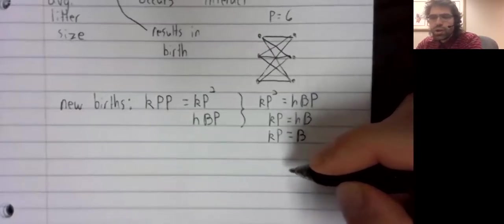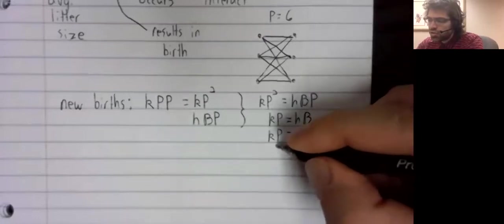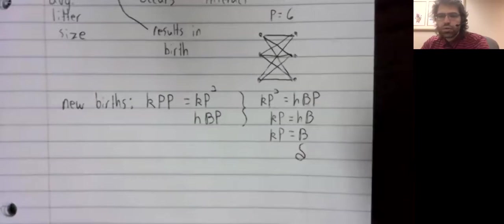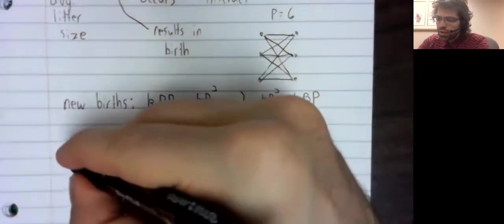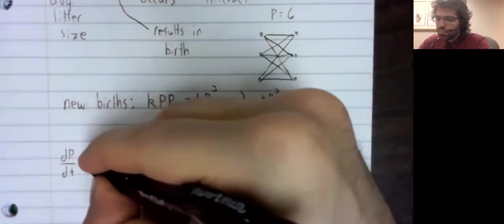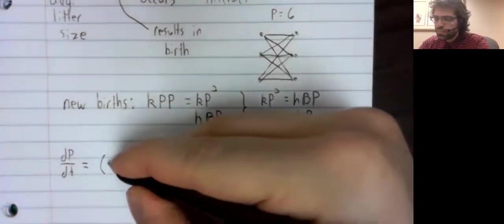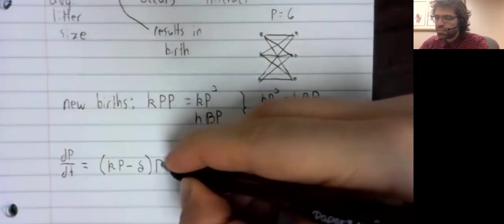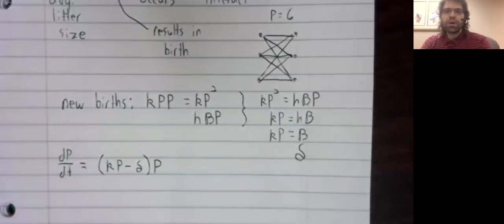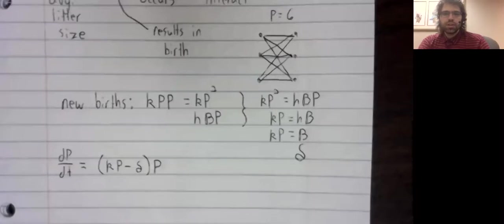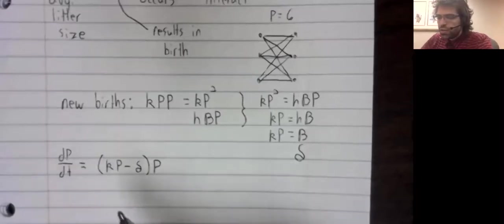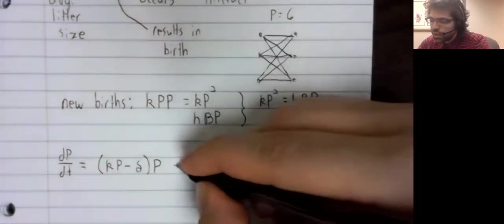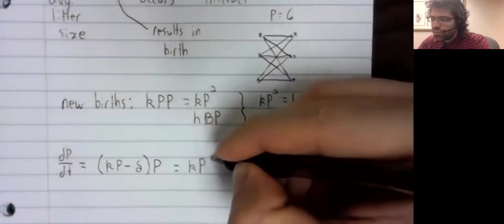And we'll assume that the death rate is constant. Call it delta. And the general population model with these assumptions becomes dp dt equals the birth rate minus the death rate times the current population. By tradition, even though it doesn't change the equation, we'll pull a k out and also write this p up front.